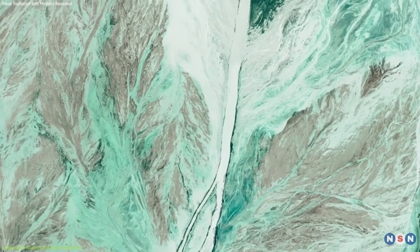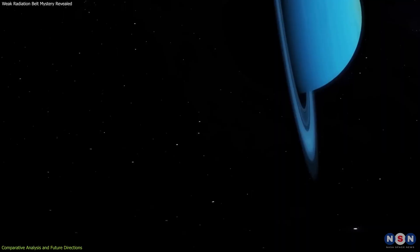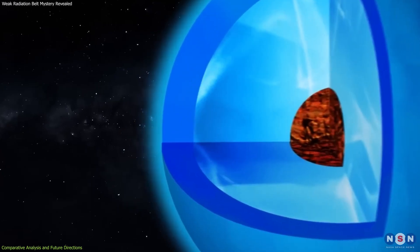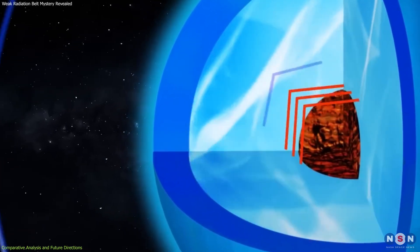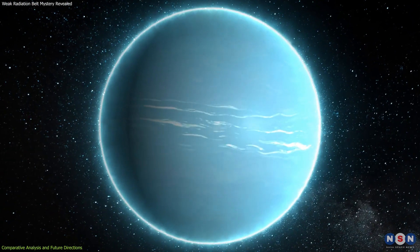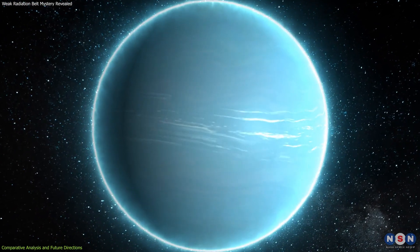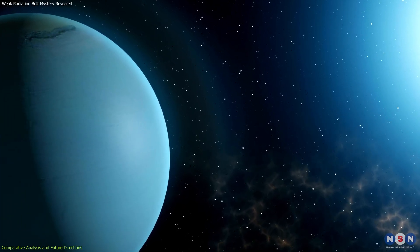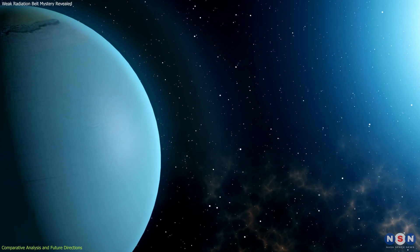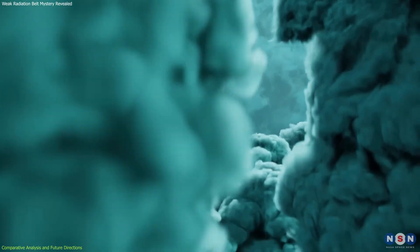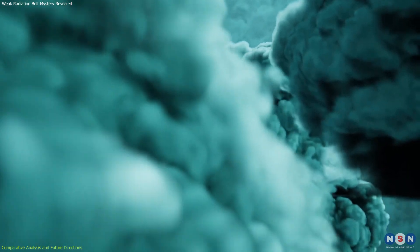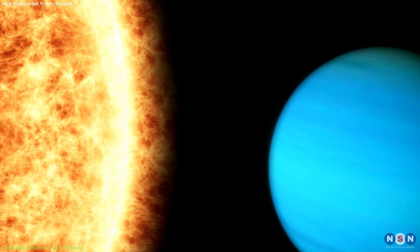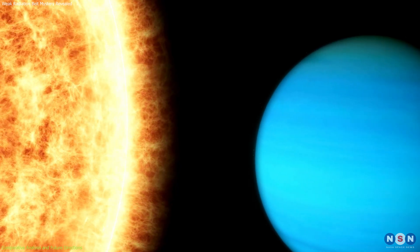The cold temperature of Uranus, colder than Neptune, is thought to be due to its extreme axial tilt of about 98 degrees, which might affect its internal heat distribution. Additionally, Uranus' greenish color is due to the presence of methane in its atmosphere, which absorbs red light and reflects blue and green light, giving the planet its distinctive hue. These characteristics suggest complex internal and atmospheric dynamics that influence everything from the planet's appearance to its ability to shield itself from cosmic and solar radiation.